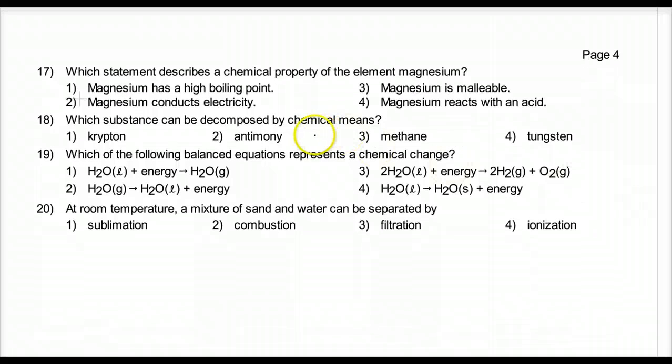Which statement describes a chemical property of the element magnesium? Chemical. It's not about boiling or phase changes. These are physical properties. Magnesium conducts electricity. And that's pretty physical. Magnesium is malleable. Well, hammering it into a thin sheet doesn't change its chemical formula. But magnesium reacting with acid will change its structure and make it become something new. That's a chemical property. Four.